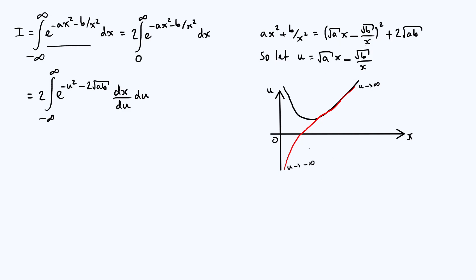So let's first make x the subject. We can do that by multiplying the whole thing by x and turning it into a quadratic equation, which will look like this: root a x squared minus ux, so we take that u term to the other side, and then minus root b is equal to zero.